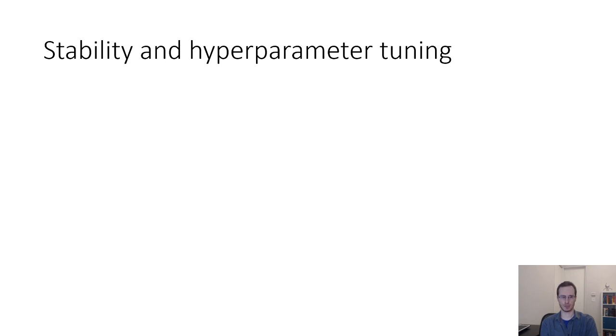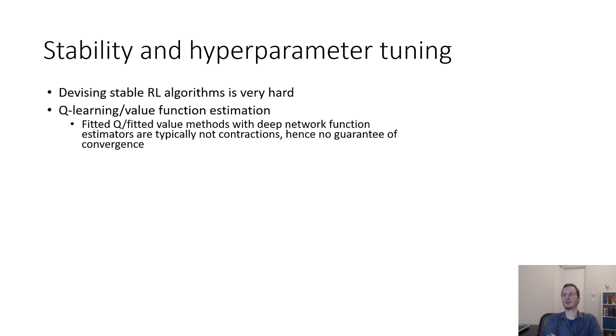So let's start with stability and hyperparameter tuning. Does your algorithm converge? Can you get it to converge successfully? Devising stable RL algorithms is very hard. And each class of RL algorithms has their own problems. For example, when it comes to Q-learning and value estimation, fitted Q or fitted value methods with deep neural network function approximators are typically not contractions, and hence they don't have a guarantee of convergence.